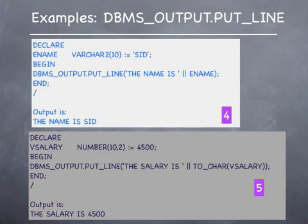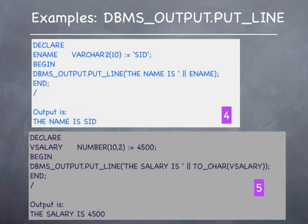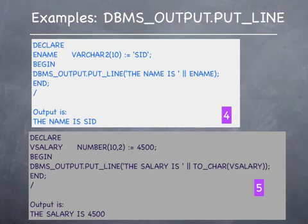Here are two more examples of the use of DBMS_OUTPUT. In example 4, a variable called ename is being declared with an initial value of SID. In the body of the program, the DBMS_OUTPUT.PUT_LINE statement appears — the string 'the name is' is being combined or concatenated with the value of the variable ename. The concatenation operator is the double pipe symbol. In example 5, a similar program is displayed except that a numeric variable called vsalary is declared with an initial value of 4500. The DBMS_OUTPUT.PUT_LINE statement displays the string 'the salary is' along with the contents of the variable vsalary. The TO_CHAR function converts the value to a character string so that the concatenation between the strings can happen.